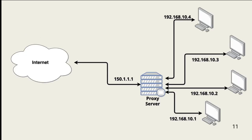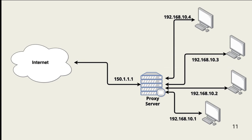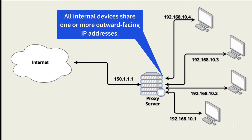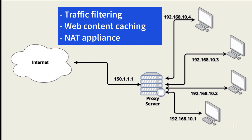Proxies isolate devices on one network from devices on another network. In this example, a proxy server sits between the internet and internal network devices. Devices on the internet can only see the proxy server and the proxy server's externally facing IP address. This helps prevent threat actors from directly accessing internal devices or mapping internal network configurations. Many internal devices share a smaller number of externally facing IP addresses. Proxies can also filter traffic, caching web content, and serve as a NAT appliance. Each side of a proxy is a different collision and broadcast domain.